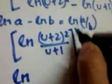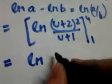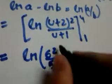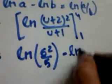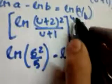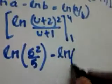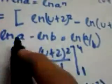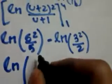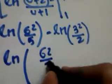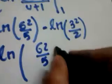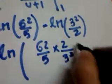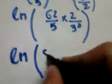Putting in the values: when u = 4, we get (4+2)² over (4+1) = 36/5. When u = 1, we get (1+2)² over (1+1) = 9/2. So the result is ln(36/5) minus ln(9/2), which equals ln[(36/5) ÷ (9/2)] = ln[(36/5) × (2/9)] = ln(72/45) = ln(8/5).